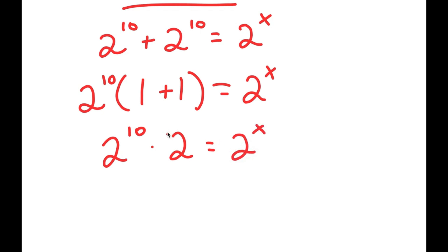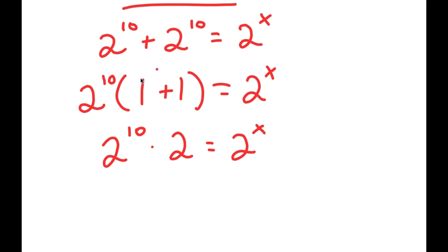A simpler way of doing this is — instead of factoring out — we have two 2 to the power of 10s here, and anything added by itself is the same thing as that number times 2. So we could have just said 2 to the power of 10 times 2 at the beginning instead of factoring it out.